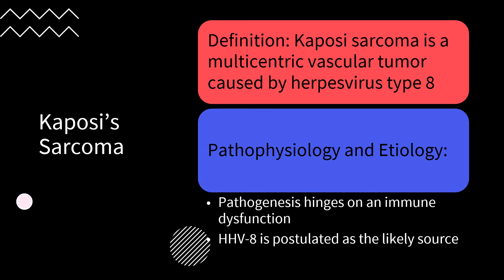Kaposi sarcoma is a multifocal malignant neoplasm of vascular origin. It may be present on the eyelid, conjunctiva, or within the orbit, and is caused by herpes virus type 8. When well developed, Kaposi sarcomas are comprised of spindle-shaped tumor cells, abnormal vessels, and variable chronic inflammatory infiltration.